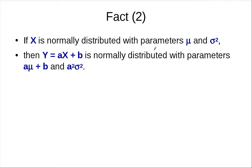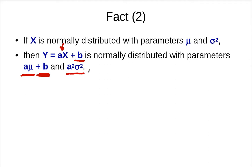If X is normally distributed with parameters mu and sigma squared, then the random variable Y = aX + b is also normally distributed. If you just add B to X, everything shifts to the right, so the mean shifts. If you multiply by a, the mean also gets that factor and the variance gets multiplied by a squared.